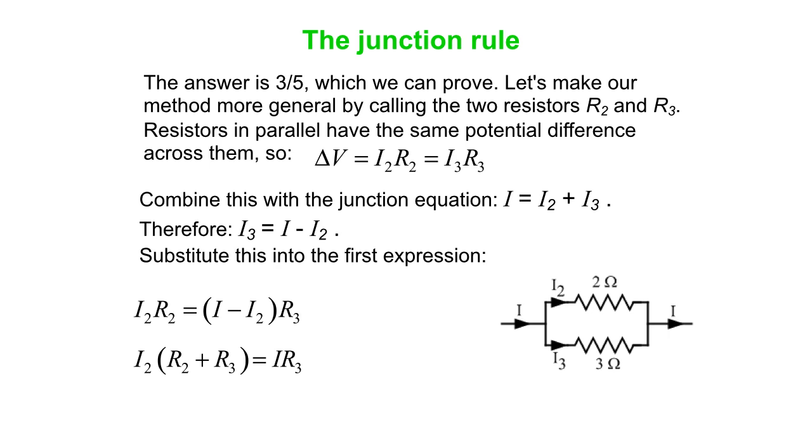So, we put the I2 terms together. We'll put the I term on the other side. We solve for I2 and we get I2 is I multiplied by this fraction, R3 over R2 plus R3. And it turns out that I3 is I multiplied by a very similar fraction, R2 over R2 plus R3. So, this works for two resistors in parallel. The fraction of the current that flows through one of the resistors is the other resistance divided by the sum of the two resistances.